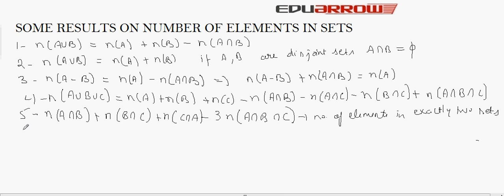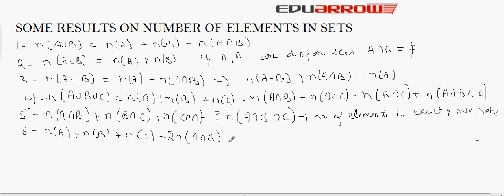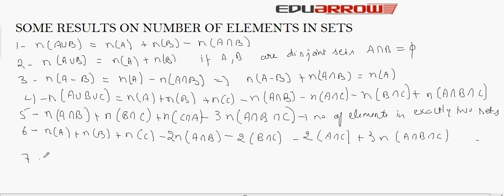The next result gives the number of elements in exactly one of the sets A, B, C. The formula is n(A) plus n(B) plus n(C) minus 2 times n(A intersection B) minus 2 times n(B intersection C) minus 2 times n(A intersection C) plus 3 times n(A intersection B intersection C).